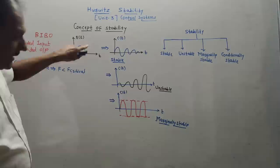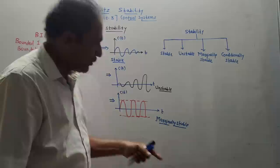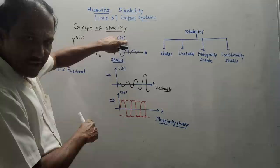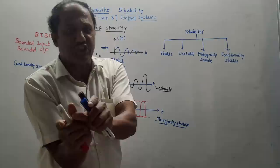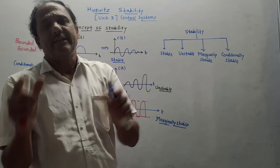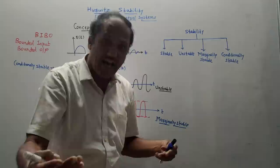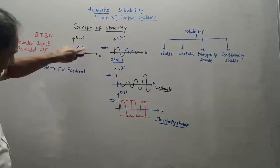In control systems, the input is denoted by R(T), called the reference input, and the output is the controlled output denoted by C(T). Remember: bounded means finite. So if you have some system and apply a finite input, you should get a finite output — that is a stable system. If we apply a finite input and get an infinite output, then the system becomes unstable.